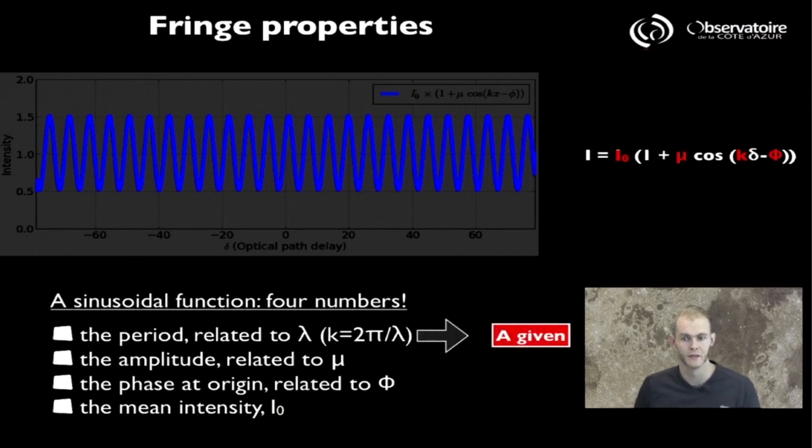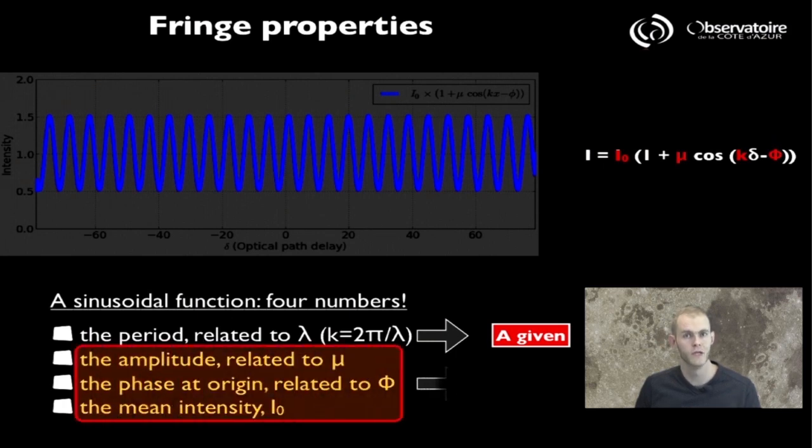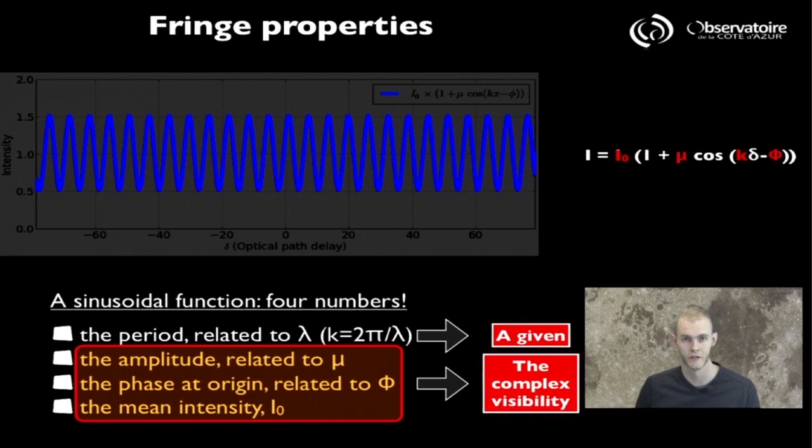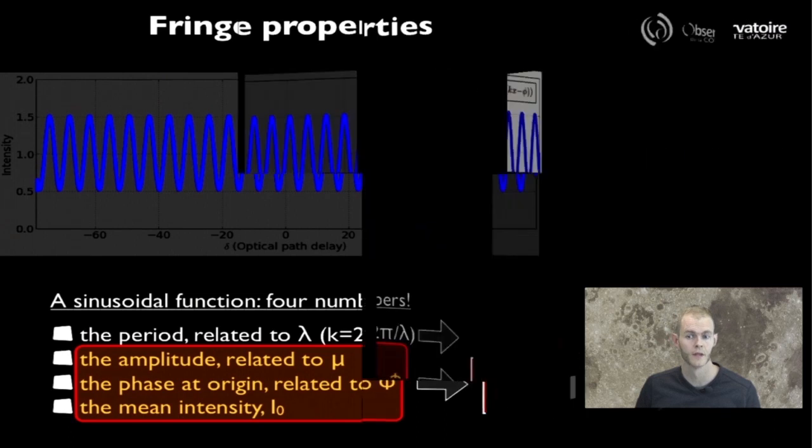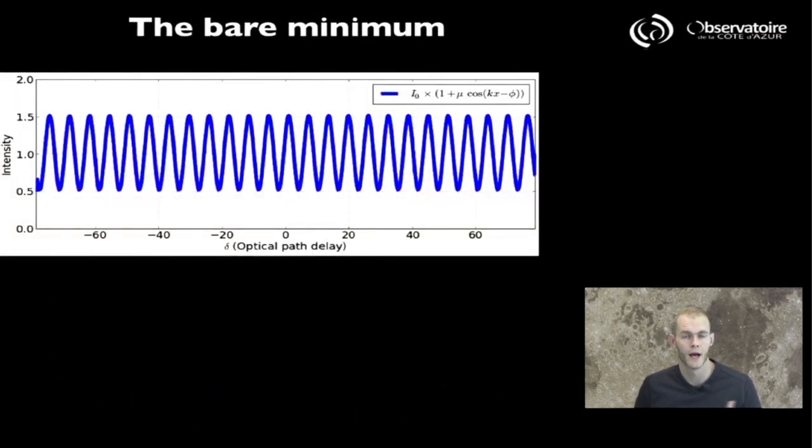We've said that the spacing between the fringes, the period, is something that is a given. The other three numbers are the ones that we really need to extract out of those fringes, because they are the ones that are going to give us access to the actual expression for the complex visibility.